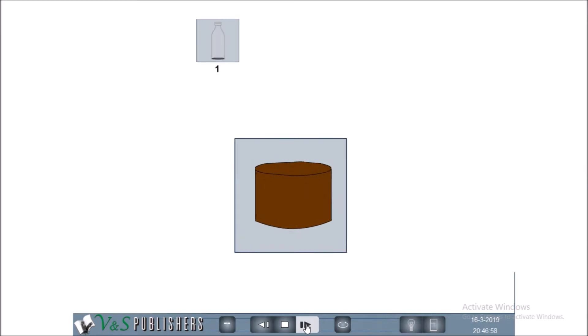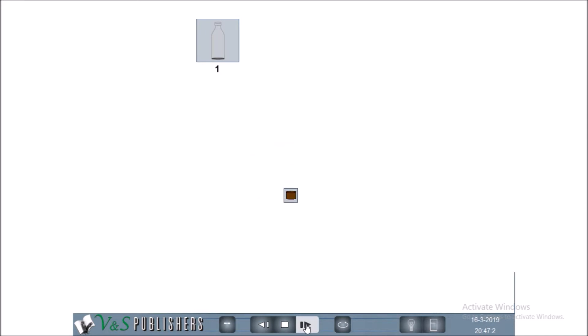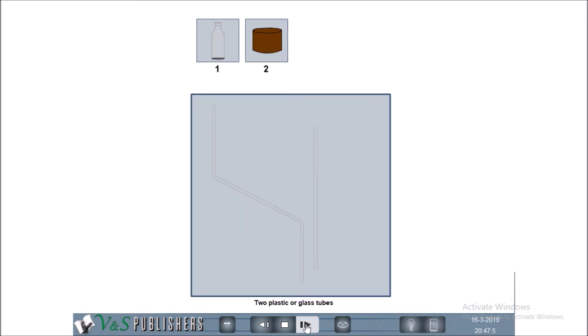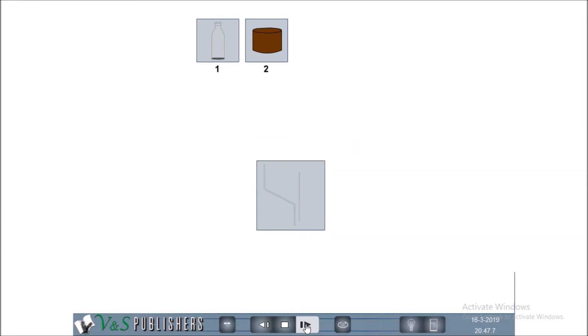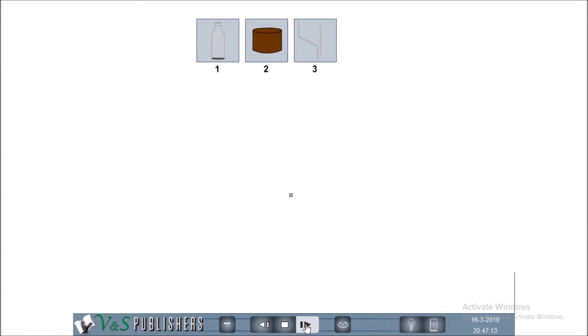One cork or rubber stopper. Two plastic or glass tubes. Two mugs. Plastic seal.